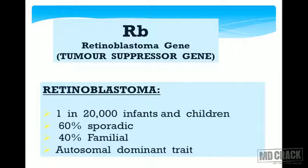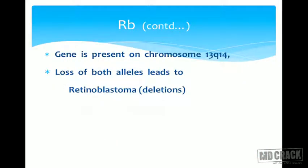Let us look in detail at a few tumor suppressor genes. The retinoblastoma gene is the most important tumor suppressor gene in humans. A defective retinoblastoma gene makes children very prone to developing retinoblastoma at a very early age — 1 in 20,000 infants and children are known to have mutations in the retinoblastoma gene. Around 60 percent are sporadic and 40 percent are familial. It is known to transmit in an autosomal dominant pattern. The RB gene is present on chromosome number 13.